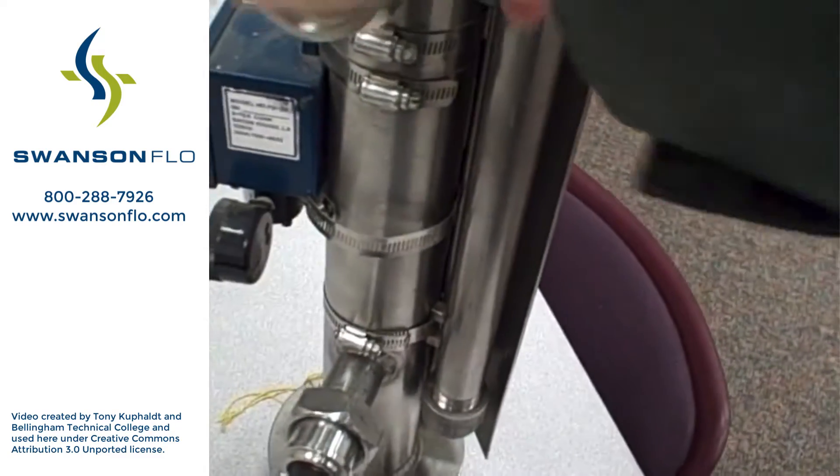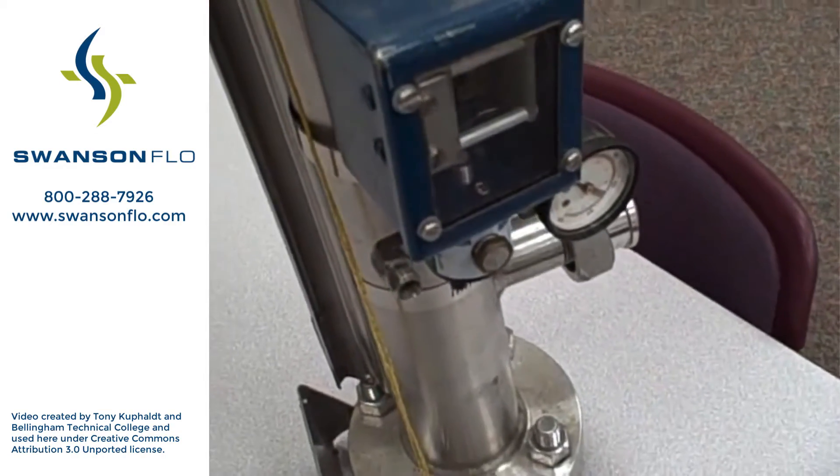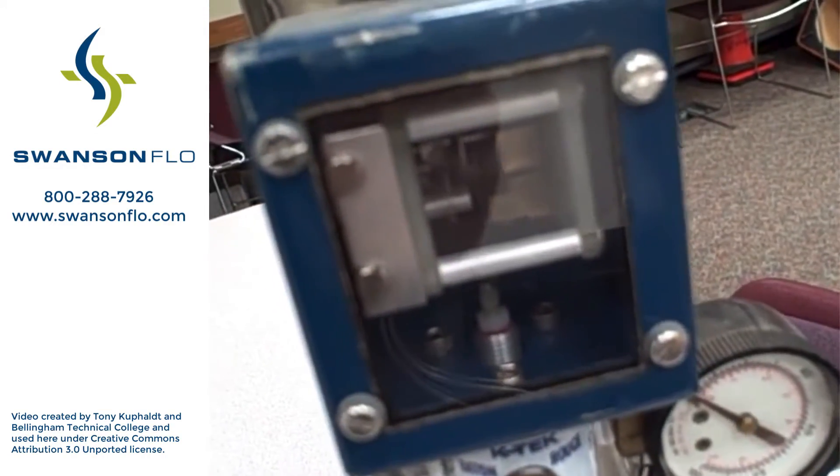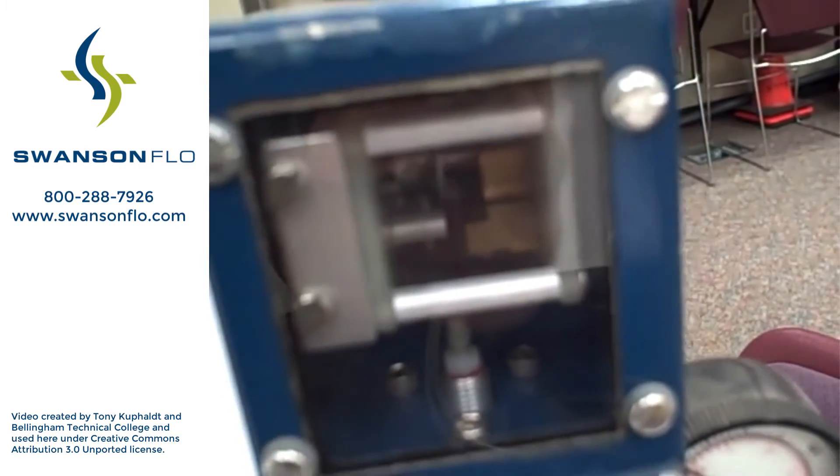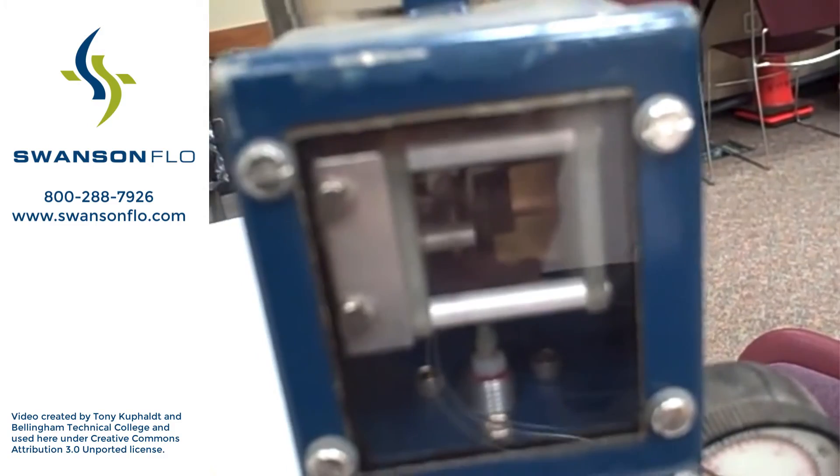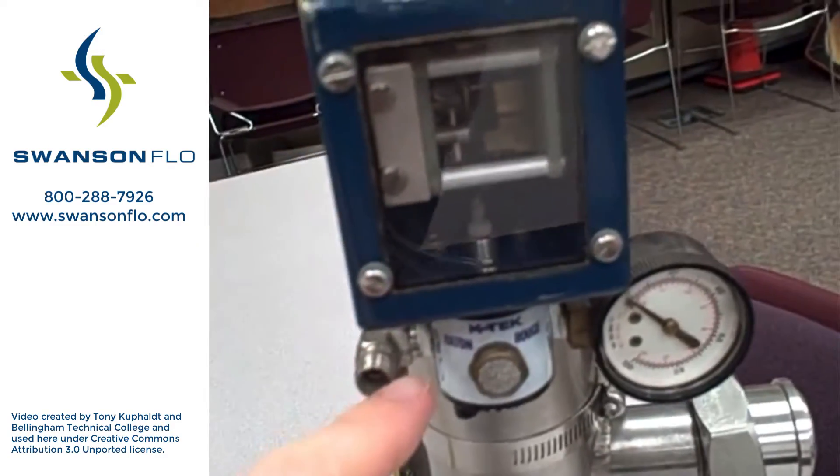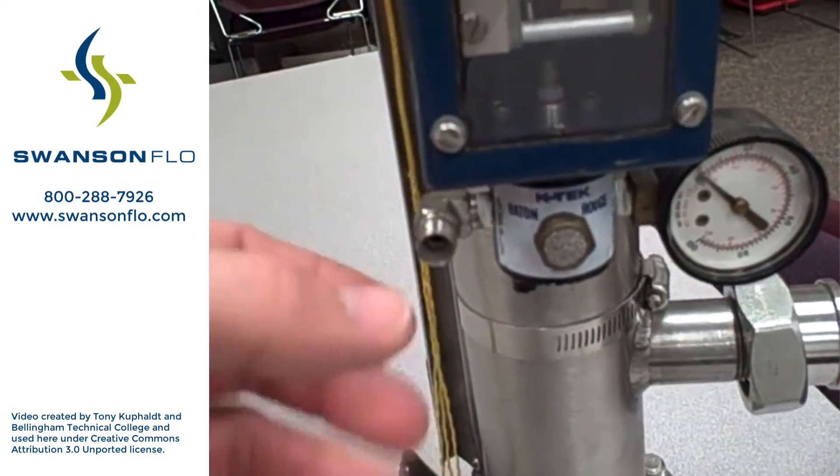Over here, we have another accessory bolted to the same magnetic level gauge. This is a pneumatic switch. If you look inside there, you can see the mechanism actually changes state, makes a noise when it does, every time that the liquid level rises above a certain position. This pneumatic switch can shuttle air pressure to different locations and directions.